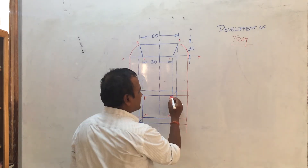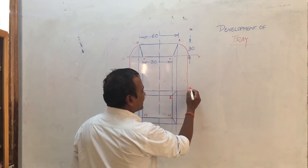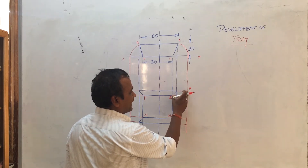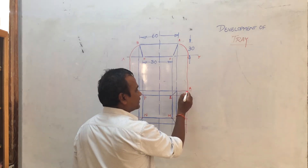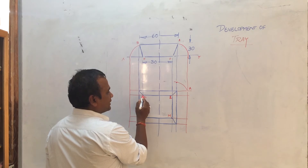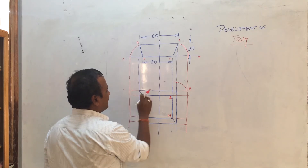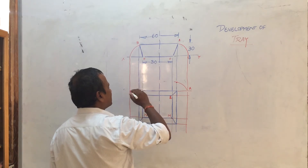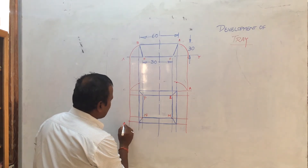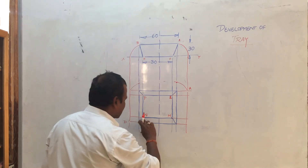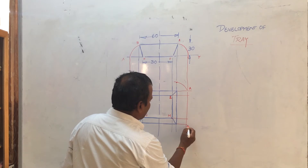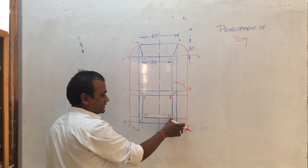Take a compass, measure the distance at point L to point A, and cut this line. In a similar way, take a compass, measure P to C and draw an arc to cut this line. Similarly, measure M to D and cut this line. Then measure M to F, take a compass, and cut this vertical line.